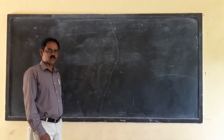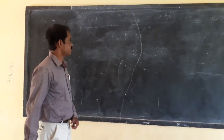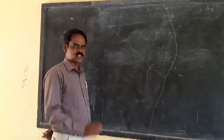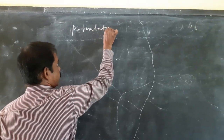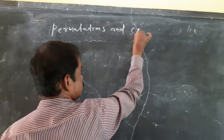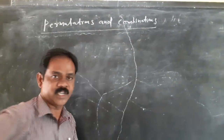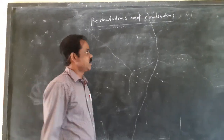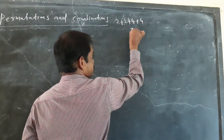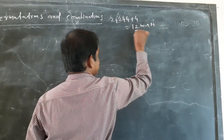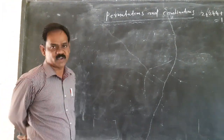Good morning, dear students. Welcome to class. Today we have to discuss one chapter: Permutations and Combinations. In the exam, this topic carries 2+2+4+4 equal to 12 marks. This is an important chapter in your algebra.